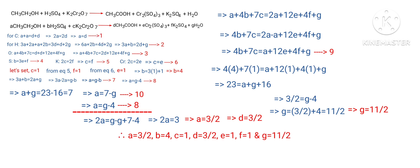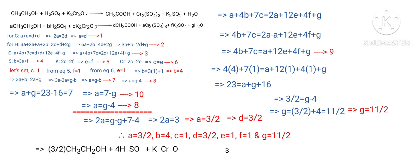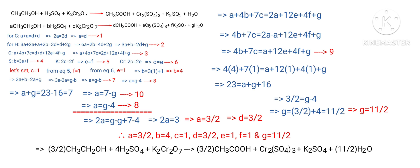Now substitute all values A, B, C, D, E, F, and G into the equation: (3/2)·CH3CH2OH plus 4·H2SO4 plus 1·K2Cr2O7 gives (3/2)·CH3COOH plus 1·Cr2(SO4)3 plus 1·K2SO4 plus (11/2)·H2O. Since 3/2 and 11/2 are rational numbers and chemical equations require whole numbers, multiply the entire equation by 2.